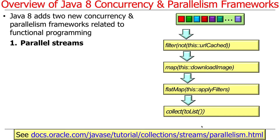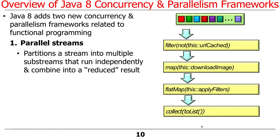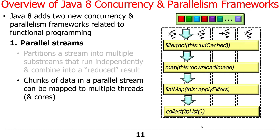One of the things provided are parallel streams. A parallel stream partitions a stream into multiple substreams using spliterators — specifically parallel spliterators. These chunks can run independently in multiple threads or multiple cores, and after they're done, they can be joined together into a reduced result. The key point is that these substreams can automatically be mapped to multiple threads and multiple cores.